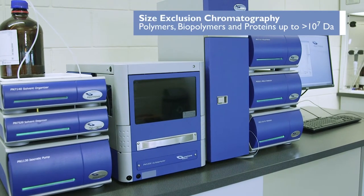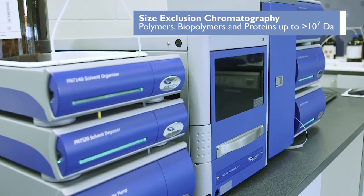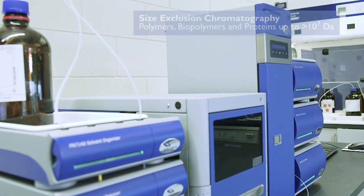The size exclusion chromatography option for the platform is perfect for smaller polymers and proteins. The same sample can be separated sequentially by both techniques, providing valuable orthogonal data, particularly when analyzing protein aggregates.